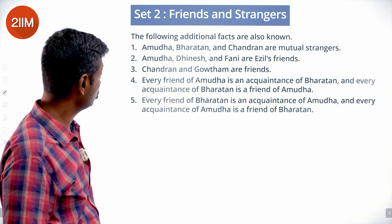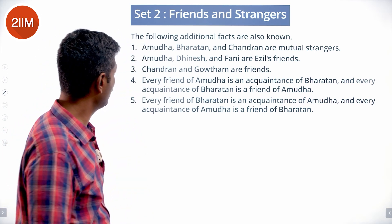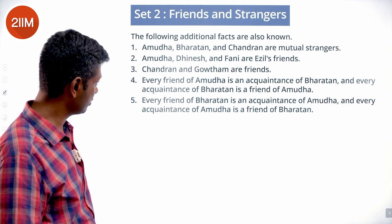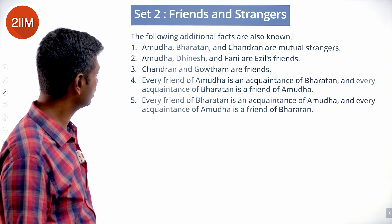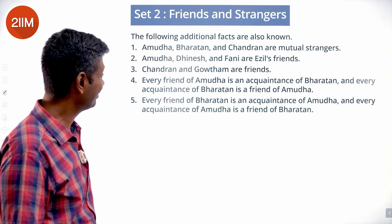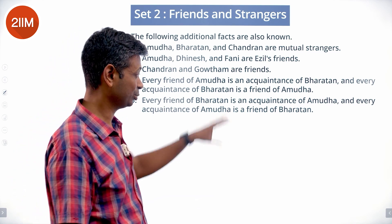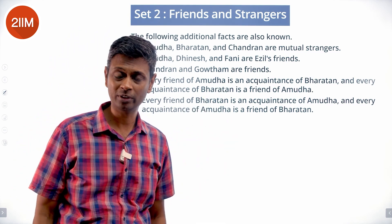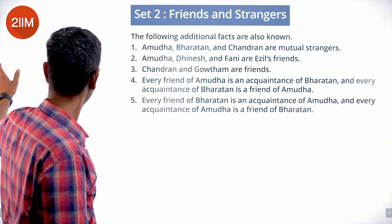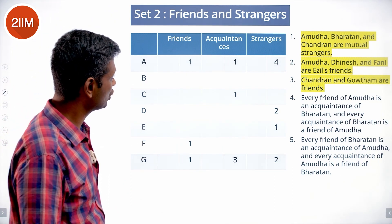The following additional facts are also known: Amudha, Bharatan, and Chandran are mutual strangers. Amudha, Dinesh, and Fani are Edil's friends. Chandran and Gautam are friends. Every friend of Amudha is an acquaintance of Bharatan, and every acquaintance of Bharatan is a friend of Amudha. Every friend of Bharatan is an acquaintance of Amudha, and every acquaintance of Amudha is a friend of Bharatan — both just the same, flipped two ways.